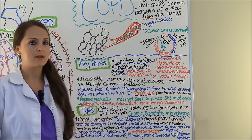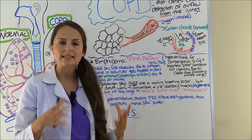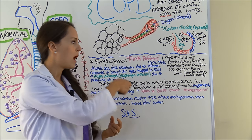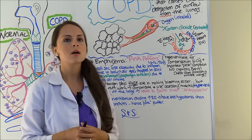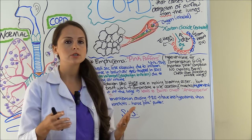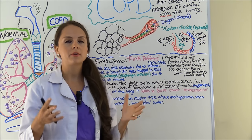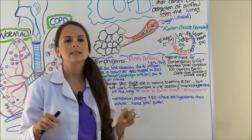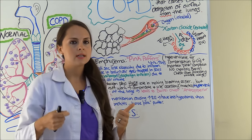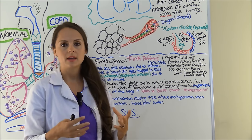Now let's look at emphysema. These patients are sometimes called pink puffers. Patients with emphysema tend not to have the cyanosis seen with blue bloaters — that's why you get the name pink. The puffing comes from compensation: because the body has low O2 levels from what's happening with the alveolar sacs, the body will hyperventilate and increase the respiratory rate, puffing rapidly to get more oxygen in.